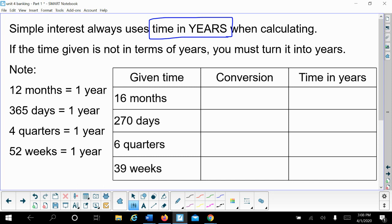If time is not given to you in terms of years, you have to turn it into years. I put over here on the side just a couple of common conversions in case you weren't aware - months, days, quarters, weeks - those are going to be the most common time periods you're going to see and how many of those are equal to one year.